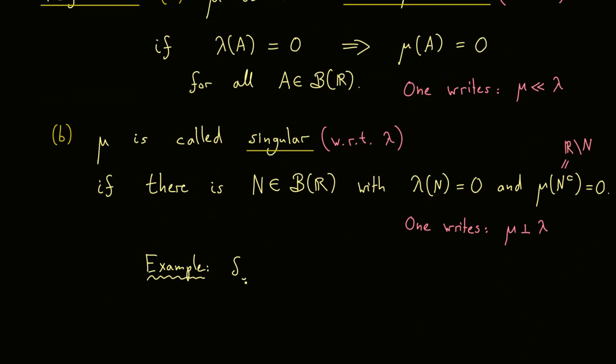Now here you already know one good example. Namely the Dirac measure at the point zero. Which means it sends the set that only contains one element, namely zero, to one. And also all other sets that contain zero are sent to the measure one. However if the set does not contain zero it is sent to zero. Hence here we see immediately the Dirac measure in zero is singular with respect to our Lebesgue measure. To show this we only have to choose such an N. And you see a good choice would be again just a set that contains zero. Obviously the Lebesgue measure here is zero. And also the complement measured in mu which is now delta zero is also zero.